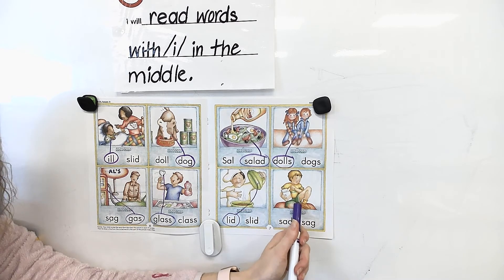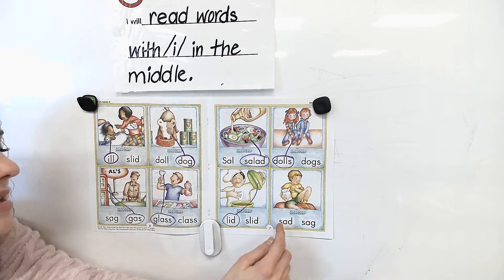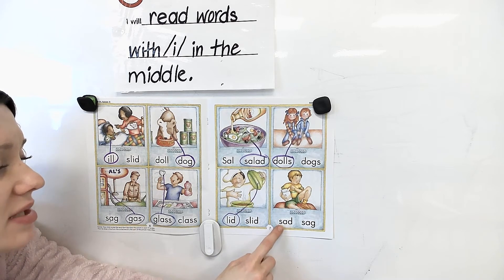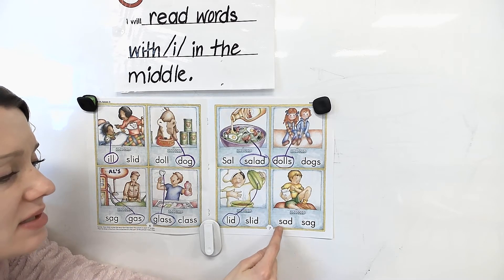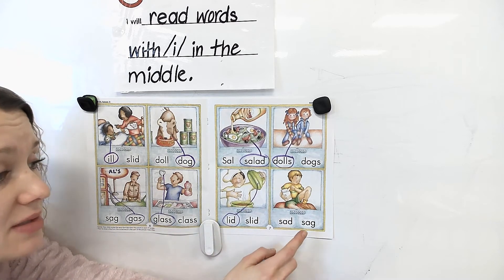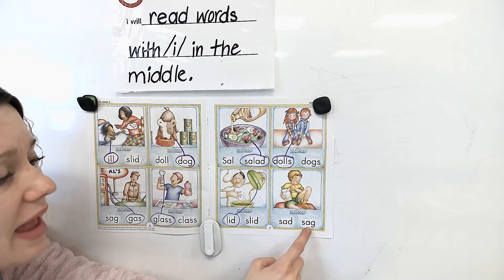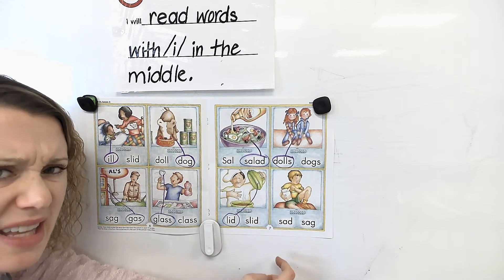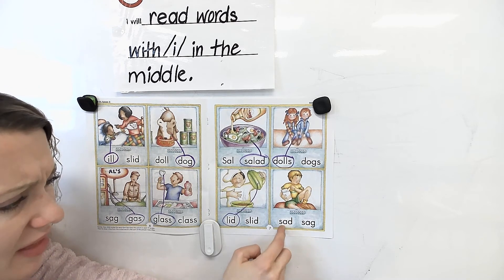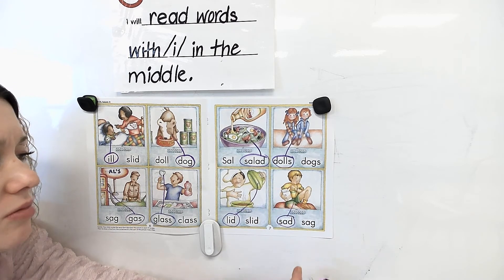Now look at this little boy. He fell. And what does he need — what did he go grab? Yeah, he went to grab a box of band-aids. He must have gotten hurt. Let's sound out these two words. Ready? Set, go — S-A-D. Sad. Does he look sad? I think so. Let's read this second word just to make sure — S-A-G. Sag. Does he look like he's sagging? No — I think he looks more sad. So let's circle the word sad. Draw a line to his sad face. He does look sad.